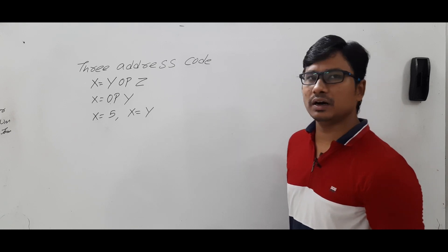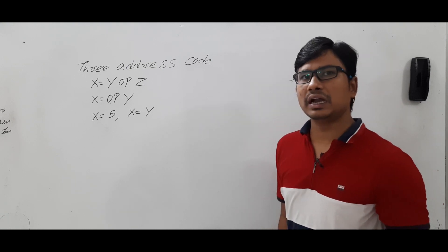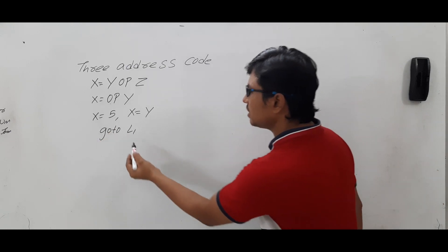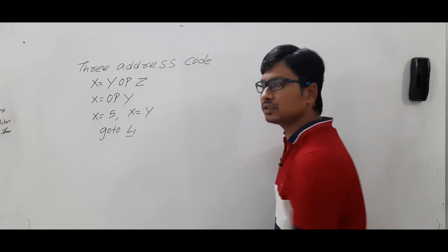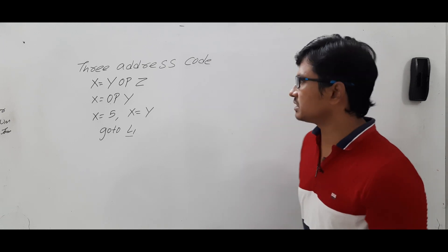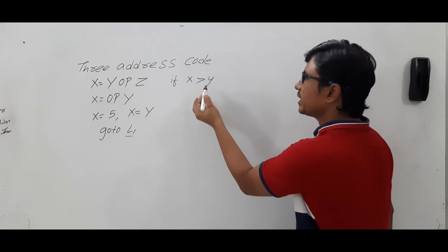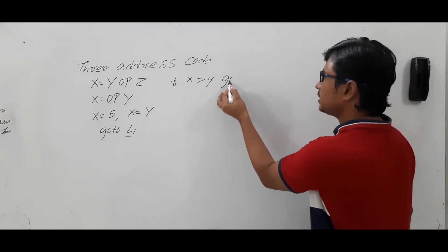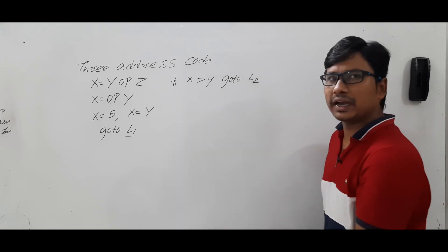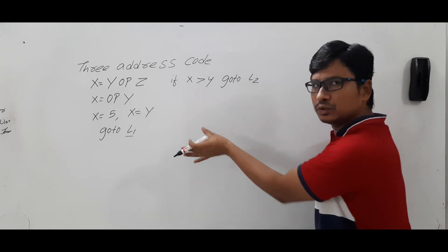If you want a goto statement — unconditional or conditional — for unconditional goto you write: goto L1, where L1 is the address of the target instruction. For a conditional goto, you write: if x > y goto L2. If the condition is true, you go and execute the statements at L2. If the condition is failed, you execute the instructions written for that case.